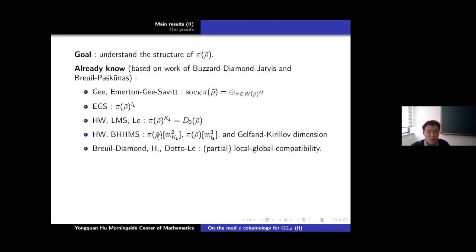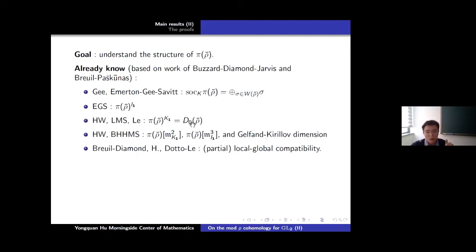We also know the subspace of π(ρ̄) killed by M_{K1}^2, where M_{K1} is the maximal ideal of the Iwahori-Hecke algebra associated to K1. This space killed by the square of that maximal ideal — and also the subspace killed by M_{I1}^3. These results allow us to control the gap for the K1-invariant dimension of π(ρ̄). We also know results like local-global compatibility, which lets us determine some special values of the action of the matrix (0,1; p,0) on the Iwahori invariants, to determine the diagram structure.